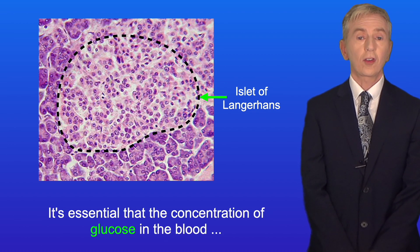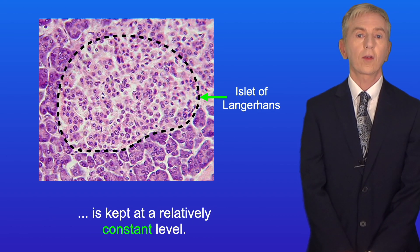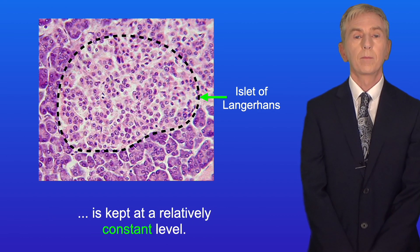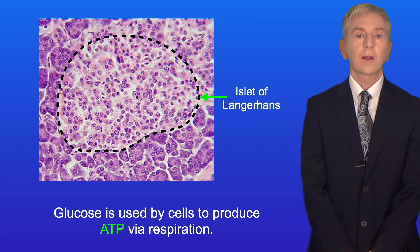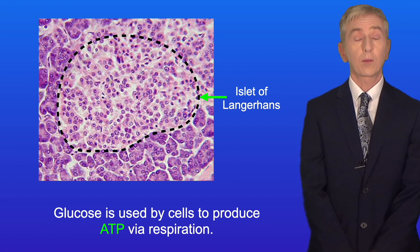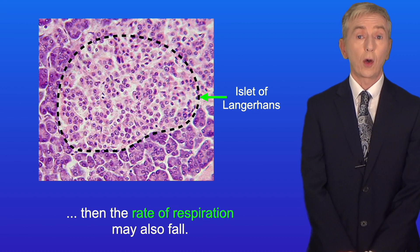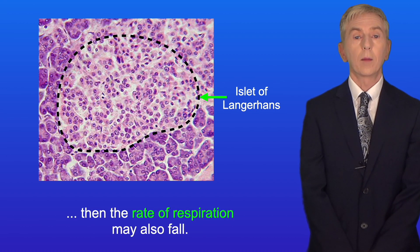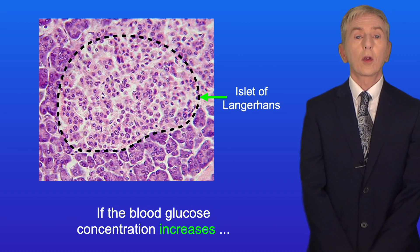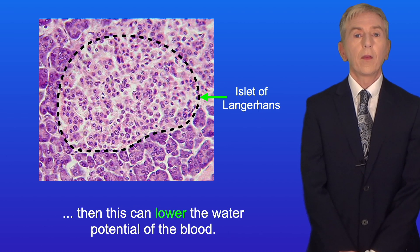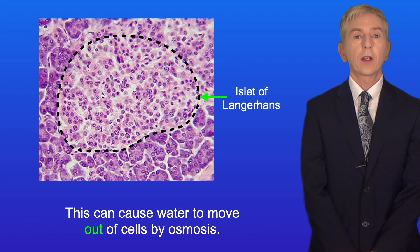It's essential that the concentration of glucose in the blood is kept at a relatively constant level. Glucose is used by cells to produce ATP via respiration, so if the blood glucose concentration falls, then the rate of respiration may also fall. If the blood glucose concentration increases, then this can lower the water potential of the blood, and this can cause water to move out of cells by osmosis.